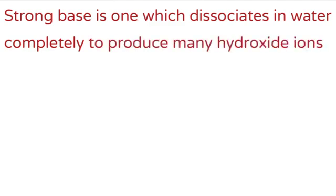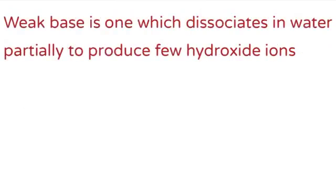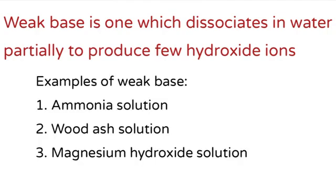A strong base is one which dissociates completely in water to produce many hydroxide ions. Examples include sodium hydroxide and potassium hydroxide. A weak base is one which dissociates partially when dissolved in water to produce few hydroxide ions. Examples include ammonia solution, wood ash solution, and magnesium hydroxide solution.